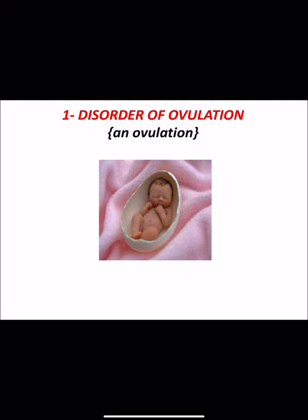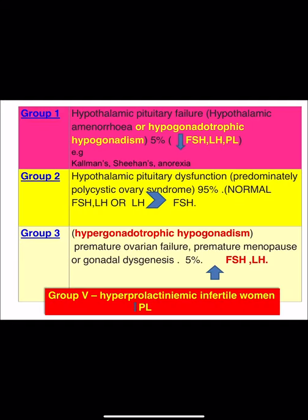Disorders of ovulation are classified by WHO into three major groups. Group 1 is hypogonadotrophic hypogonadism — low FSH and LH levels — representing 5% of anovulation cases. Examples include Kallmann syndrome, Sheehan syndrome, and anorexia nervosa. Group 2 is normogonadotrophic hypogonadism, with either normal FSH/LH or LH slightly higher than FSH, representing 90 to 95% of causes. The main example is polycystic ovary syndrome.